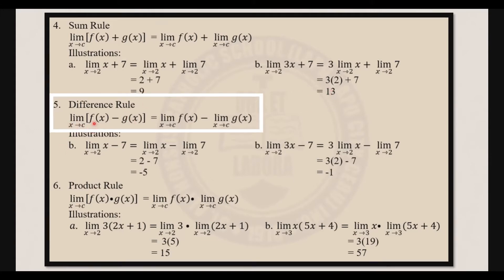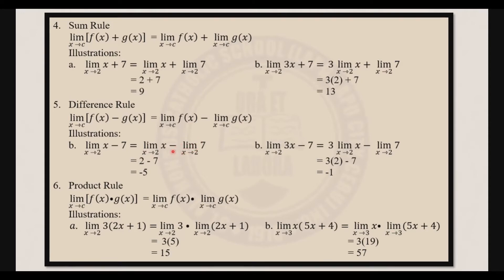Now let's have the difference rule. The limit of f of x minus g of x as x approaches c is equal to the limit of f of x as x approaches c minus the limit of g of x as x approaches c. For example, the limit of x minus 7 as x approaches 2 equals the limit of x as x approaches 2 minus the limit of 7 as x approaches 2. Applying the identity rule that's 2, and applying the constant rule that's 7. So 2 minus 7 gives us negative 5.